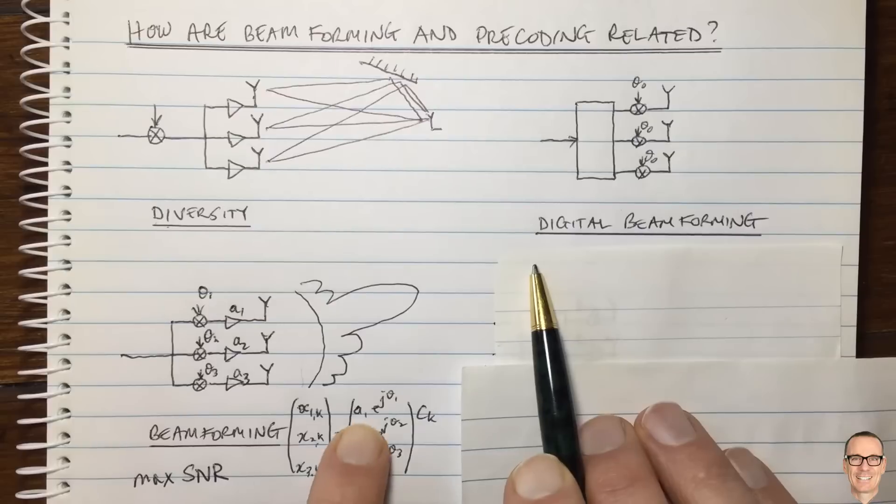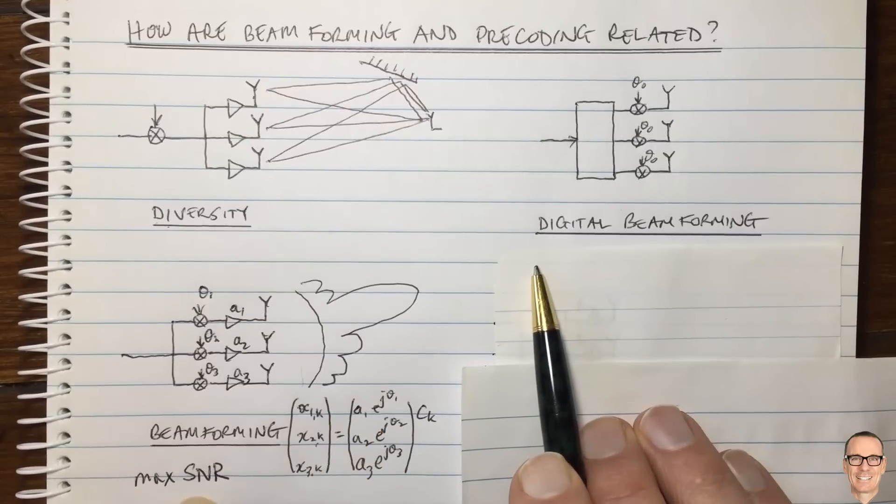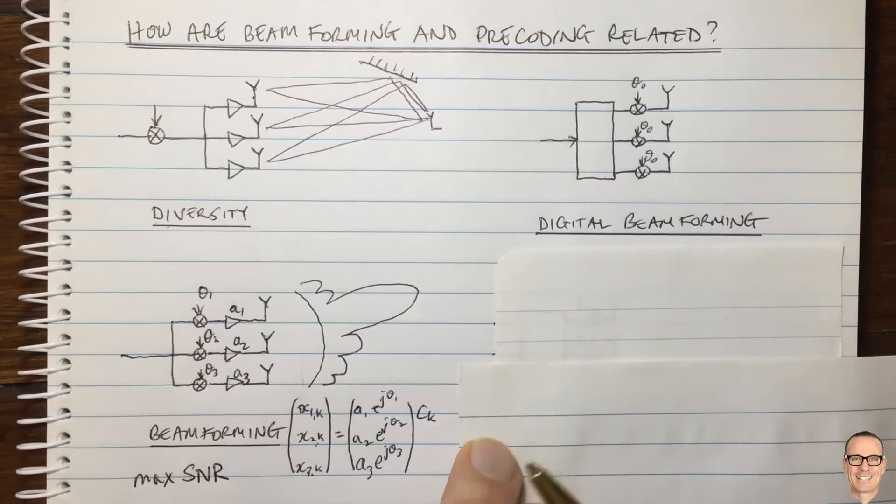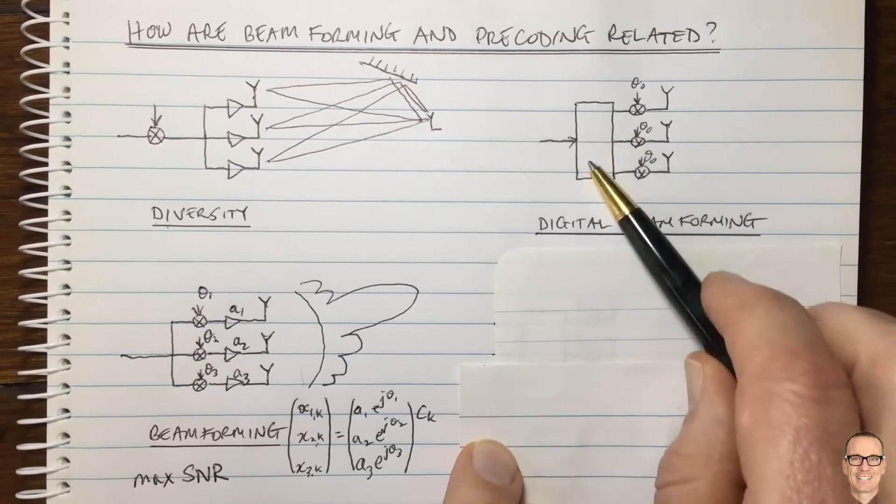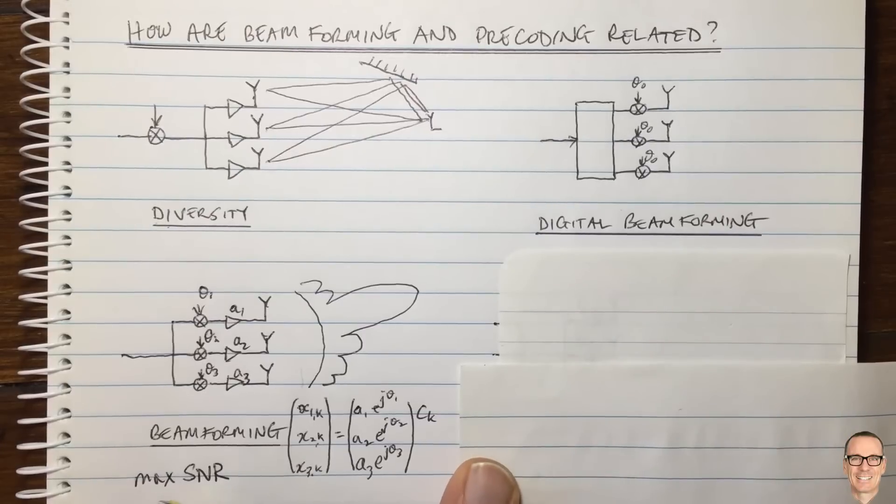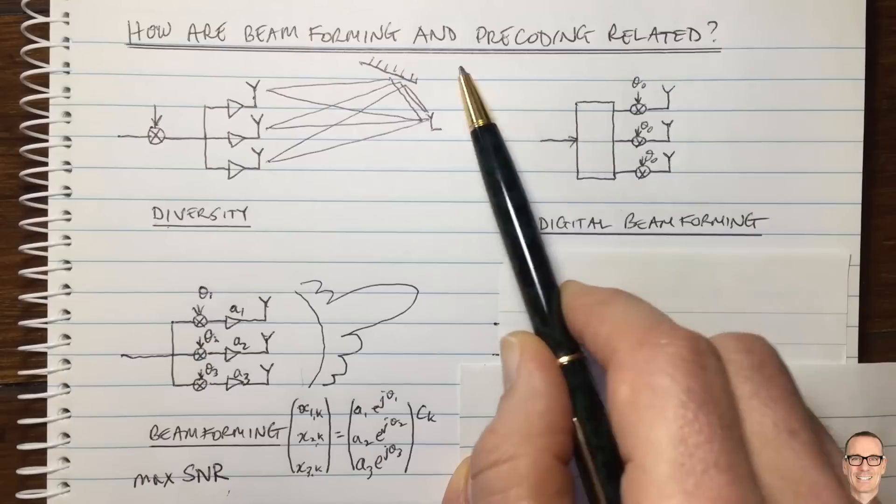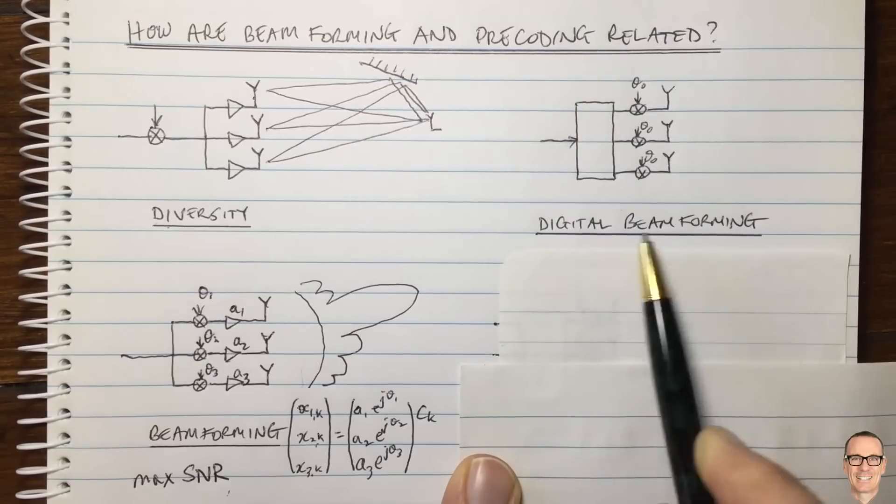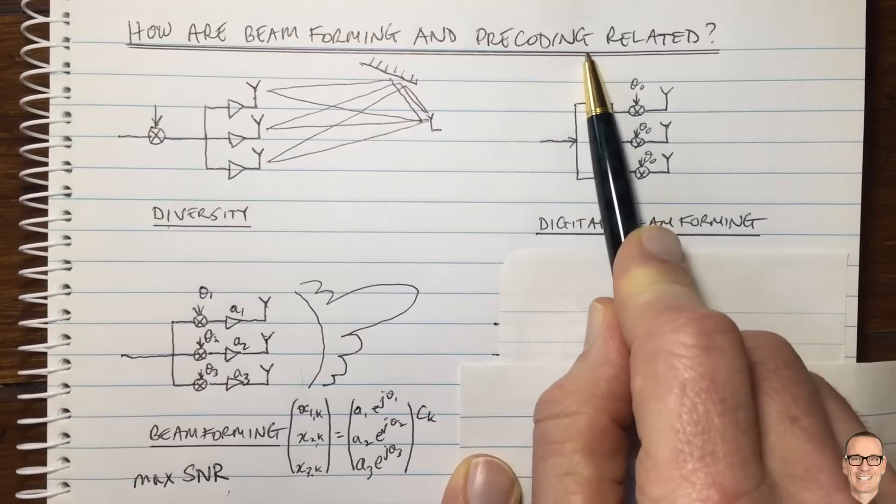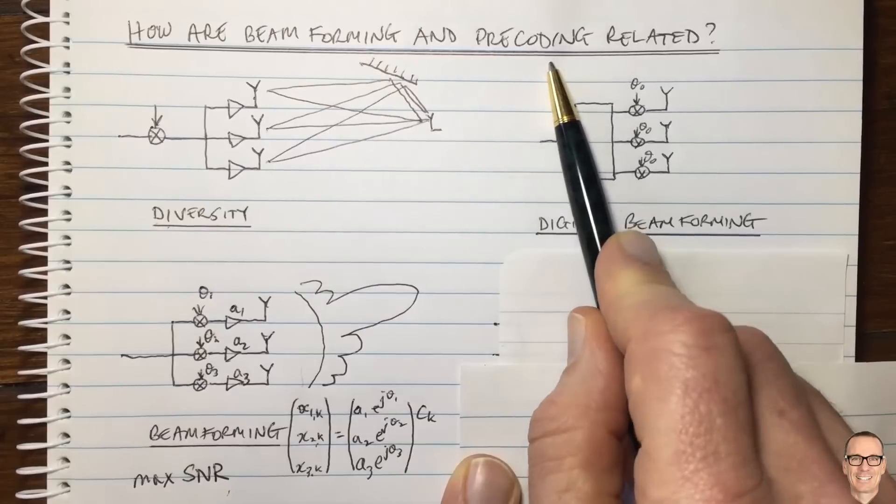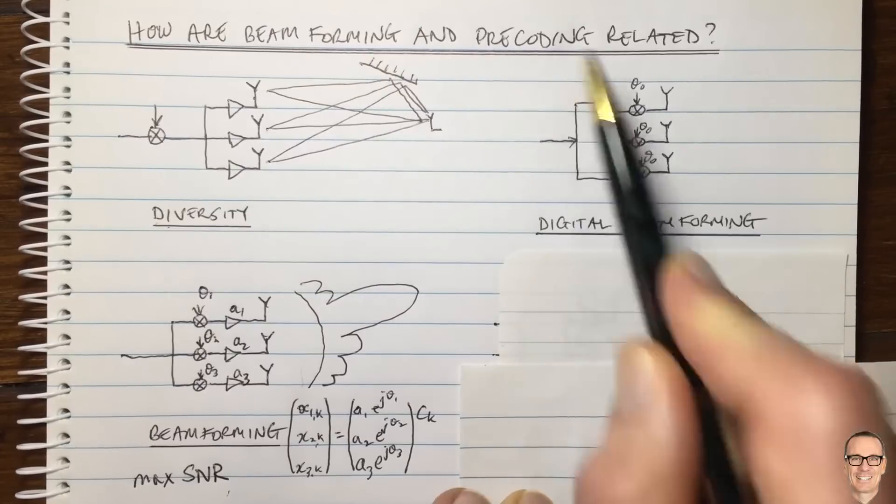Once we start thinking about this and doing things in digital form, we can start thinking about other types of cost functions, not just maximizing the signal to noise ratio. And that's what we're starting to do when we're talking about precoding. Actually, beamforming is a version of precoding. So when we ask how are they related? Well, beamforming is a special case of precoding.